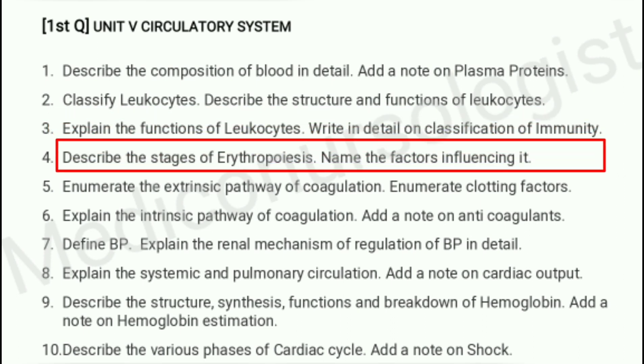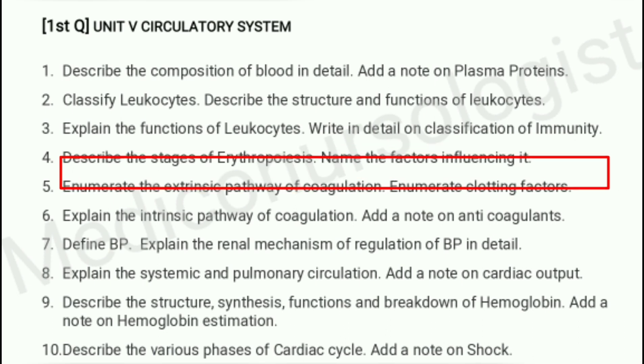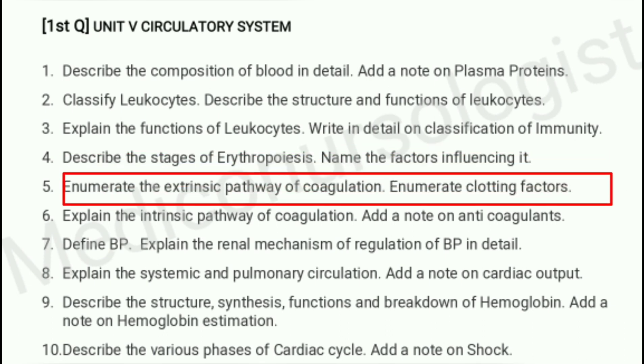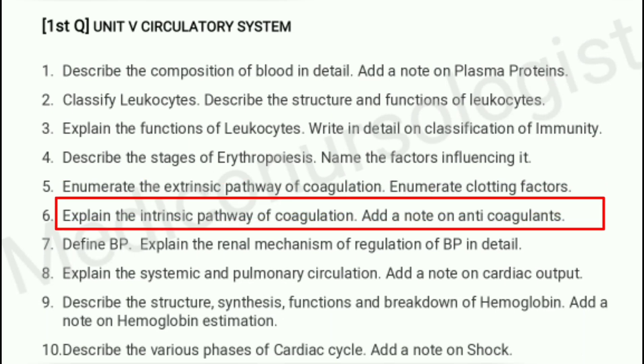Describe the stages of erythropoiesis and name the factors influencing it. Explain the extrinsic pathway of coagulation and enumerate clotting factors. Explain the intrinsic pathway of coagulation and add a note on anticoagulants.